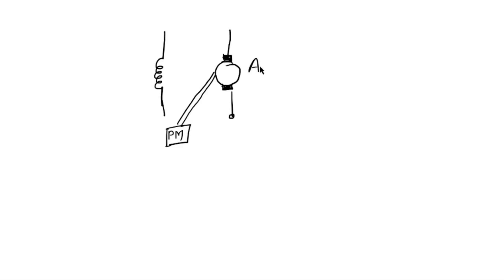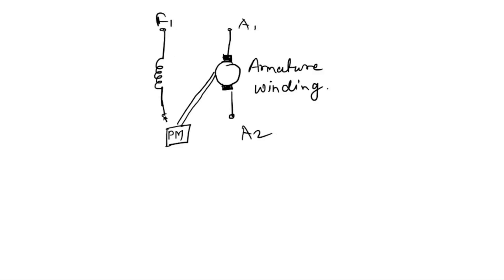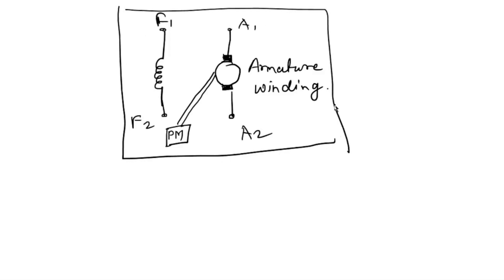तो यहाँ पर मैं आपको एक diagram दिखाती हूँ जो कि है हमारा symbolic representation of the generator. Generator को symbol में कैसे represent करते हैं वह मैं आपको दिखाती हूँ। यह है हमारा prime mover (PM), और यह है armature winding — this is A1, A2 — और यह है field winding F1, F2. यह पूरा का पूरा symbolic representation है हमारे generator का।